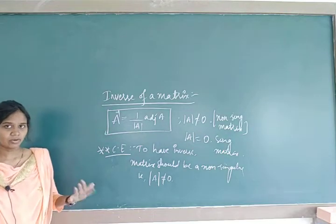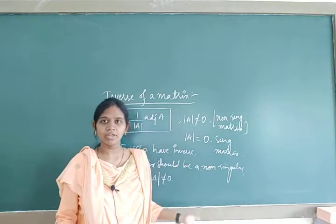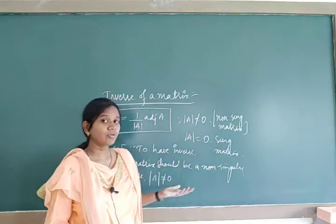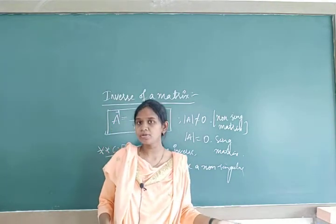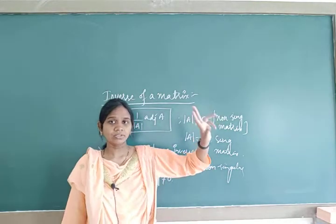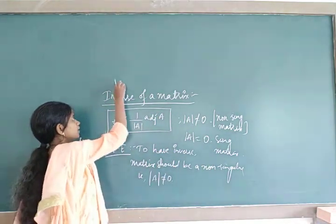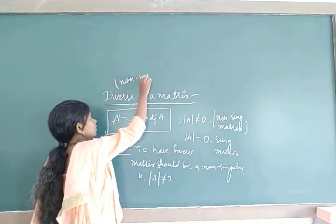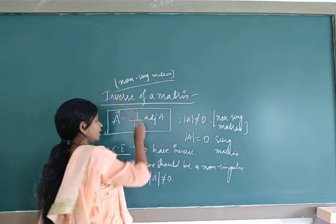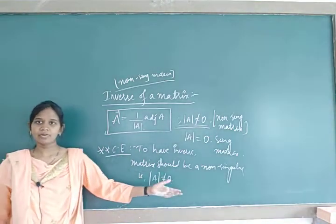To summarize the singular/non-singular conditions: when you expand the determinant and get 0, the matrix is singular. When you expand and get a non-zero value (even negative), the matrix is non-singular. The condition to have the inverse of a matrix is that the matrix must be non-singular — this is important for competitive examinations.